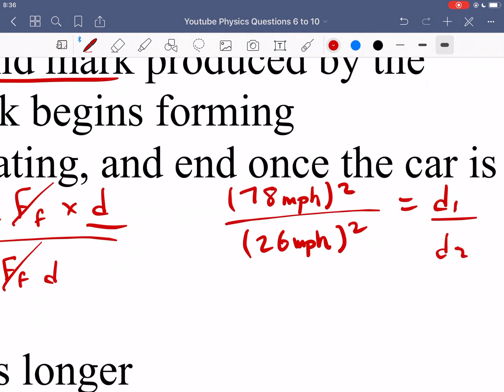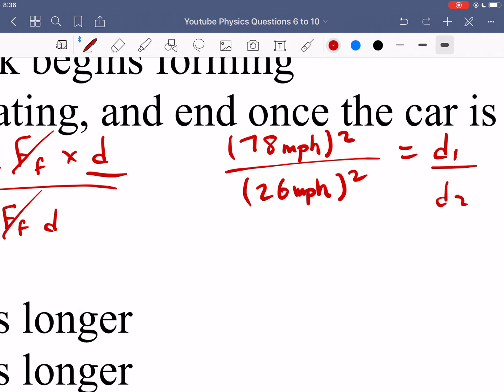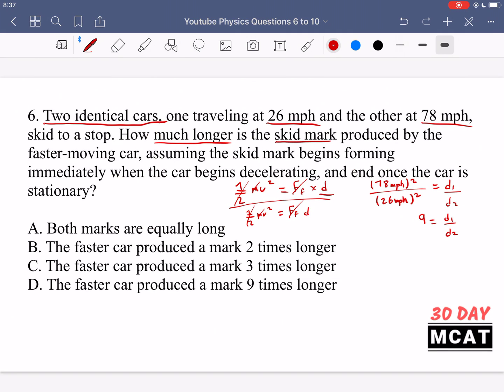And when you calculate this ratio, you see that the top one is a magnitude of 9 greater than the bottom one. Therefore, the top car is traveling 9 times faster than the bottom car and therefore it takes that much longer for the faster car to come to a stop. And that's how much longer the skid mark is. So it's going to be 9 times longer. So D is our correct answer.